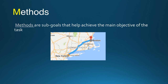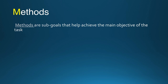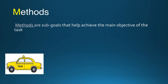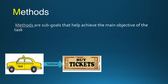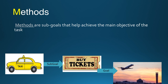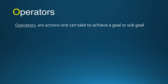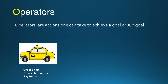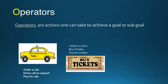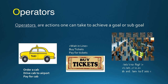M stands for Methods. They are sub-goals that help achieve the main objective of the task. As an example, a sub-goal can be catching a taxi cab to go buy tickets to achieve the ultimate goal of flying to Boston. Operators are actions that one will take to achieve a goal or sub-goal. In the previous example, ordering a cab, driving to the airport, buying tickets, waiting in line, and boarding the flight are all operators.